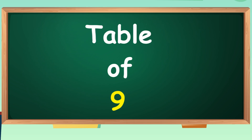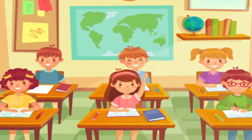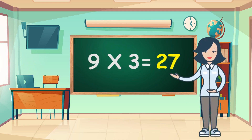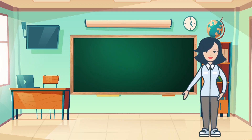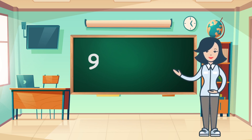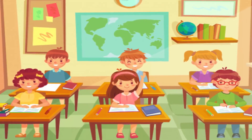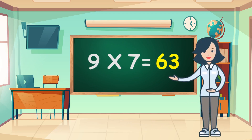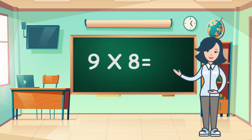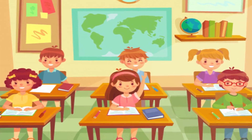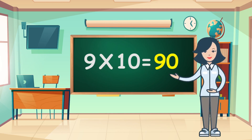Table of Nine. Nine ones are nine. Nine ones are nine. Nine twos are eighteen. Nine twos are eighteen. Nine threes are twenty-seven. Nine threes are twenty-seven. Nine fours are thirty-six. Nine fours are thirty-six. Nine fives are forty-five. Nine fives are forty-five. Nine sixes are fifty-four. Nine sixes are fifty-four. Nine sevens are sixty-three. Nine sevens are sixty-three. Nine eights are seventy-two. Nine nines are eighty-one. Nine nines are eighty-one. Nine tens are ninety. Nine tens are ninety.